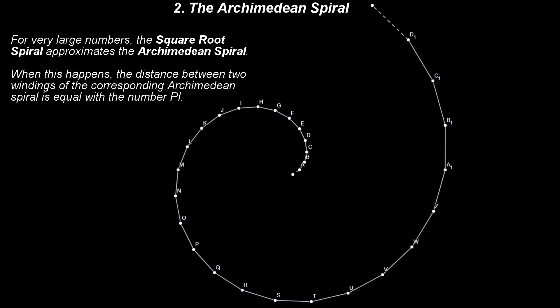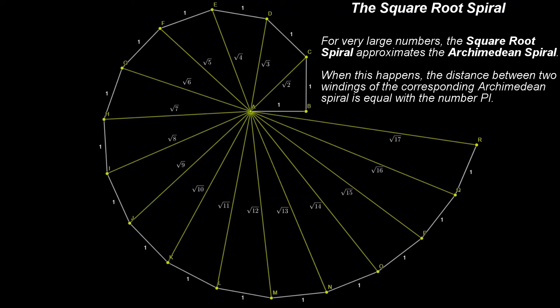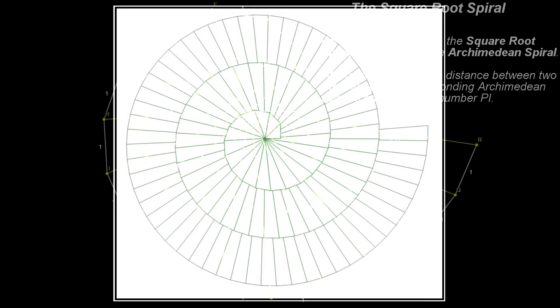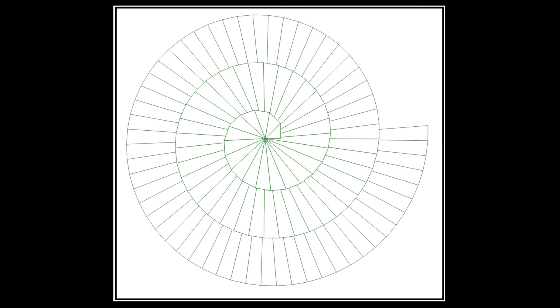A. For very large numbers, the square root spiral approximates the Archimedean spiral. When this happens, the distance between two windings of the corresponding Archimedean spiral is equal with the number pi.